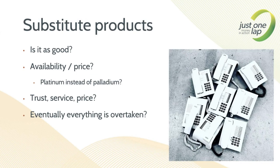Let's delve into substitute products. You sell a product — it could be a service or a physical product. The question is whether there are alternatives. For example, platinum instead of palladium: catalytic converters use PGMs — rhodium, palladium, and platinum. Platinum is around $1,000 an ounce, palladium around $2,400, and rhodium at about $17,000 an ounce. Is there a threat of switching from one to the other?